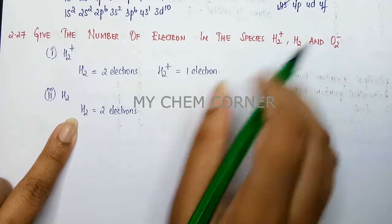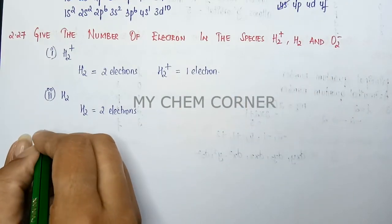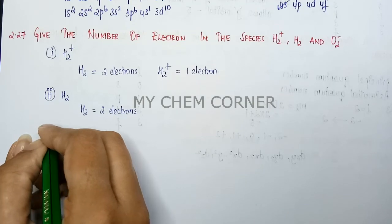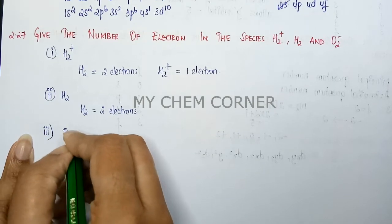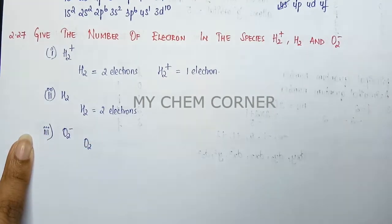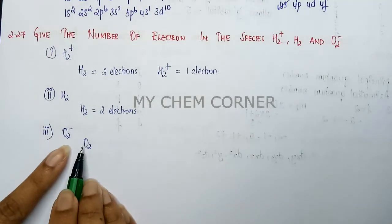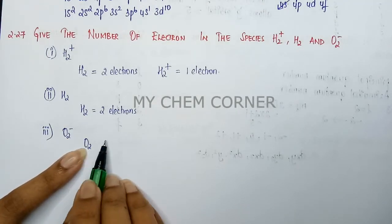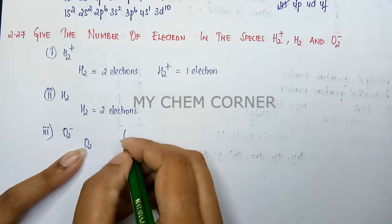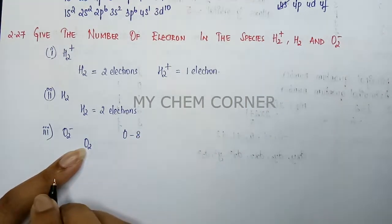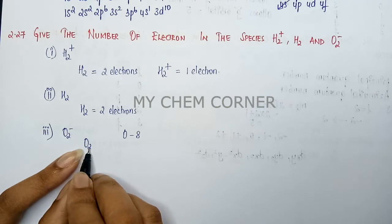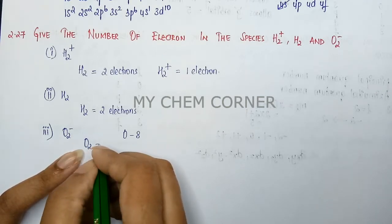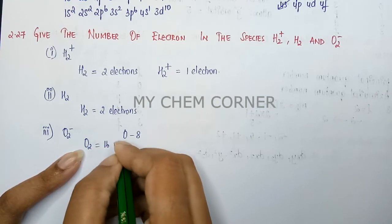Then I have O2-. Same way, for O2- I'm going to take O2 first. Oxygen by itself, as an atom, atomic number is 8. But I have O2 over here, so two oxygen atoms, therefore 16 electrons.